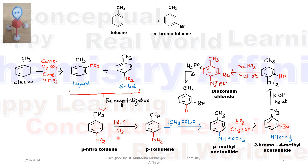Para-nitrotoluene can react with palladium on charcoal in the presence of hydrogen. The nitro group is converted to NH₂, and we are getting para-toluidine.